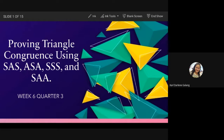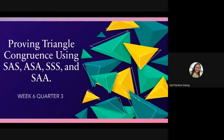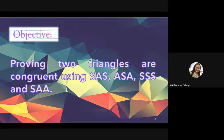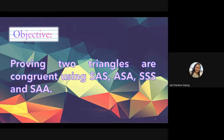Let us proceed to our objective: prove two triangles are congruent using SAS, ASA, SSS, and SAA. We need to prove that two triangles are congruent using these postulates and theorems.